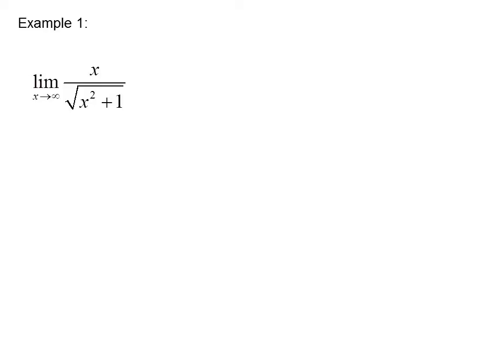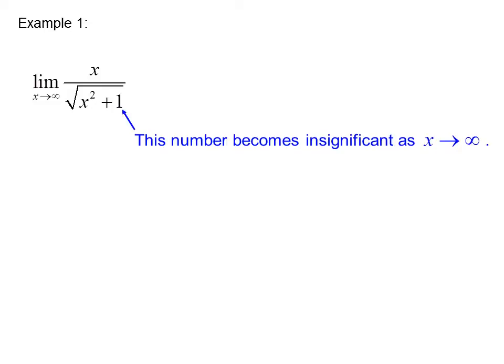Example: Find the limit as x goes to infinity of x over the square root of x squared plus 1. The number 1 becomes insignificant as x goes to infinity — it would still be insignificant if it were a thousand or a million, since it is insignificantly small compared to infinity. So we can rewrite the expression as the limit as x goes to infinity of x over the square root of x squared.